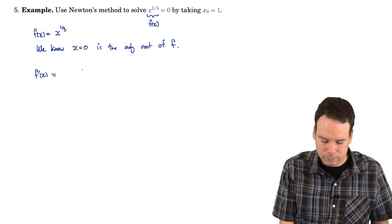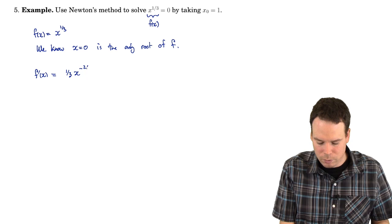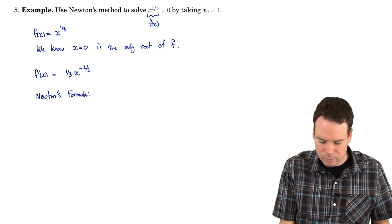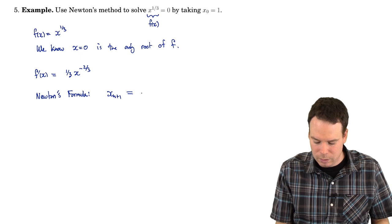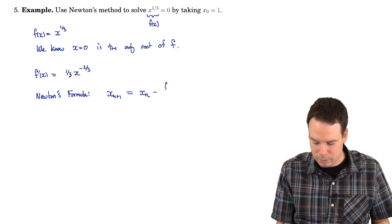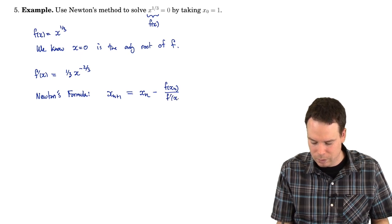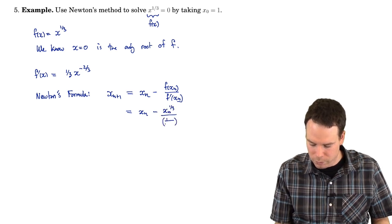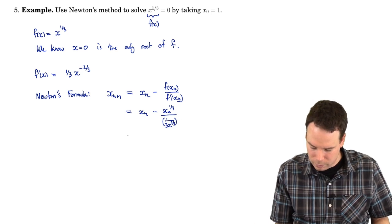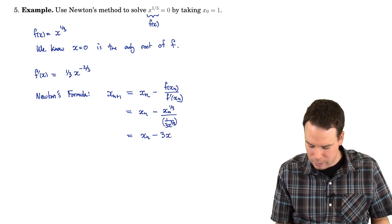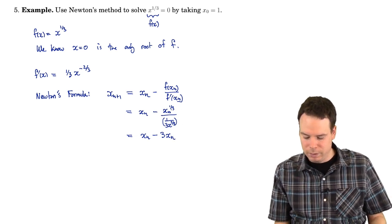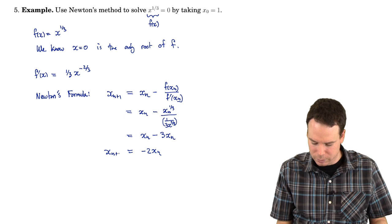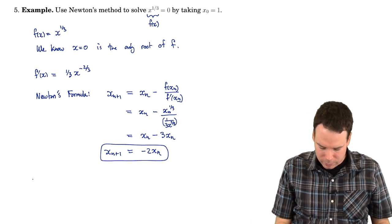We need to know the derivative. So this is going to be one-third x to the negative two-thirds. We're going to write down Newton's iterative formula. Newton's iterative formula says the next approximation is the previous one minus the function value at xn over its derivative at xn. So that's xn minus xn to the one-third all over one over three x to the two-thirds. And that becomes then xn minus three xn, which becomes negative two xn and that's xn plus one.